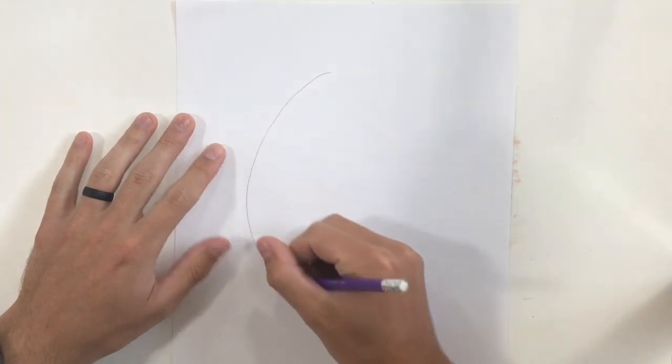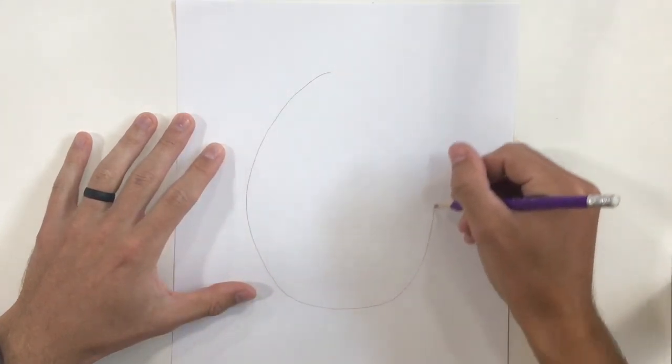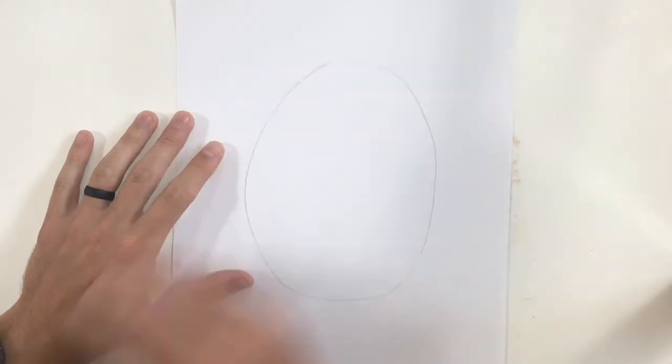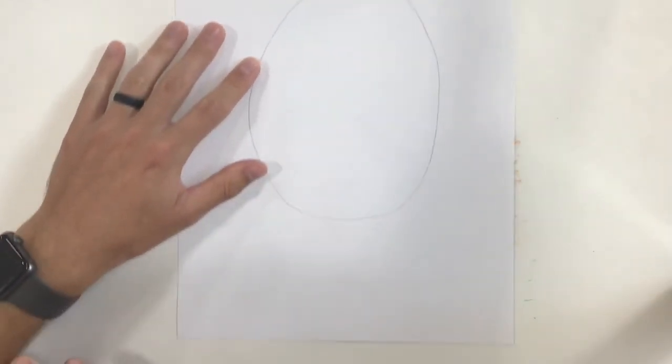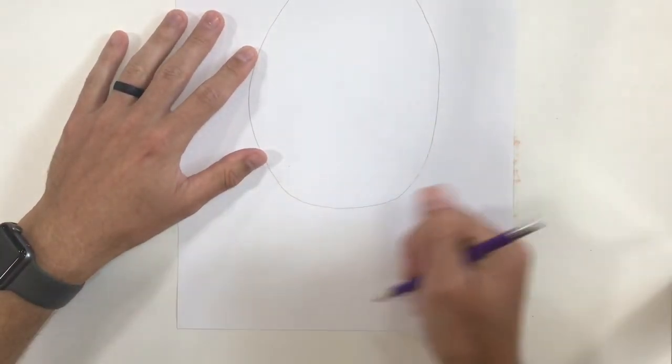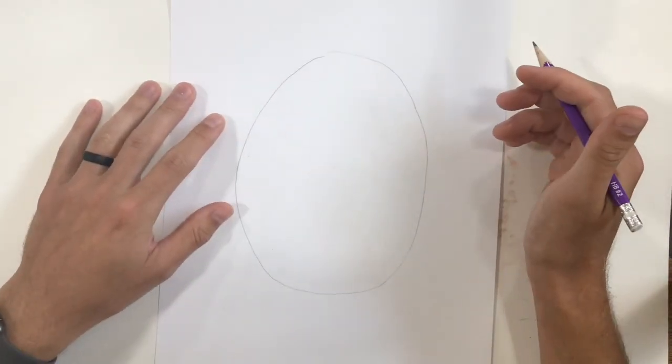So I'm going to draw a nice big oval. It should take up most of your paper. You probably want to leave a little bit of room for a neck and maybe some shoulders. This is a pretty good size.